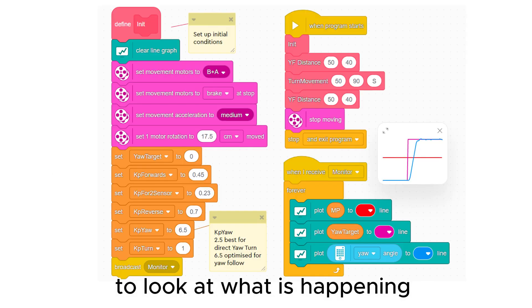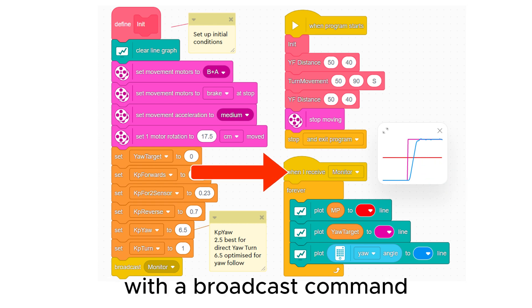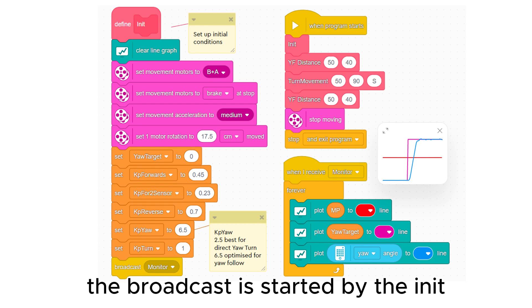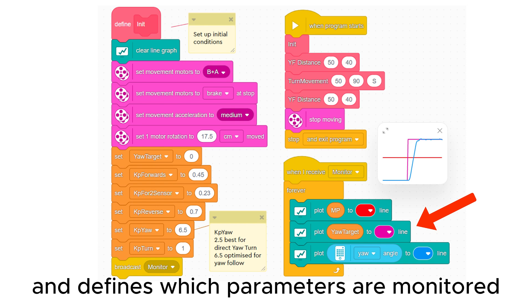To look at what is happening during the turn, I will use the line graph feature with a broadcast command. The broadcast is started by the init my block when the program starts and defines which parameters are monitored.